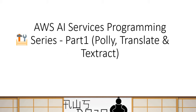Today we are starting a new series called AWS AI Services Programming Series. This is part one of the series where we are going to talk about Polly, Translate, and Textract AI Services from AWS. Let's get an overview about AWS AI Services, then we'll talk about these three services in particular, and then we'll talk about what workshop we are going to do.